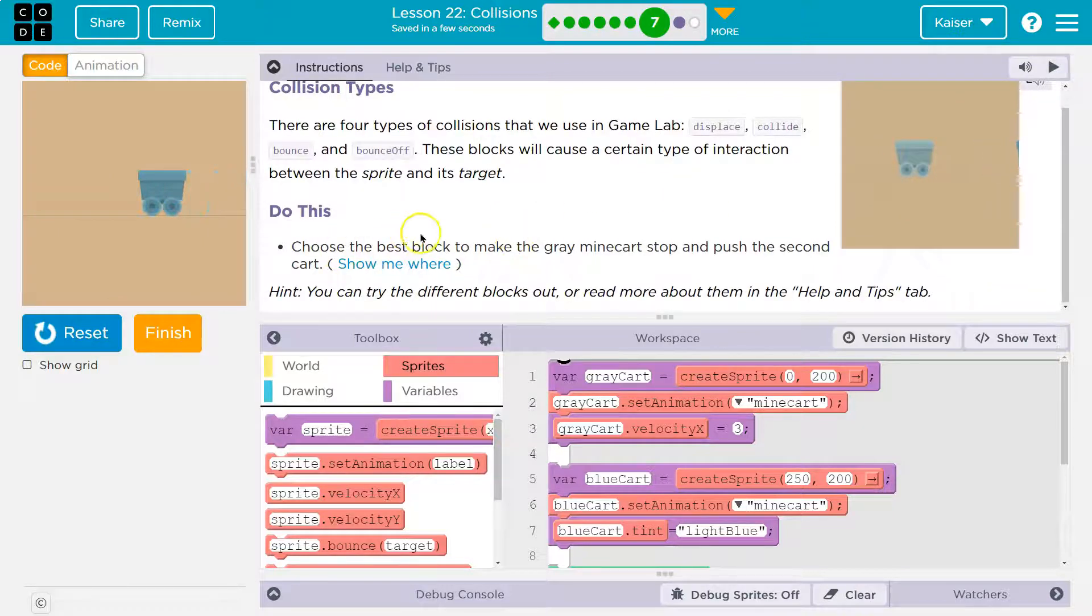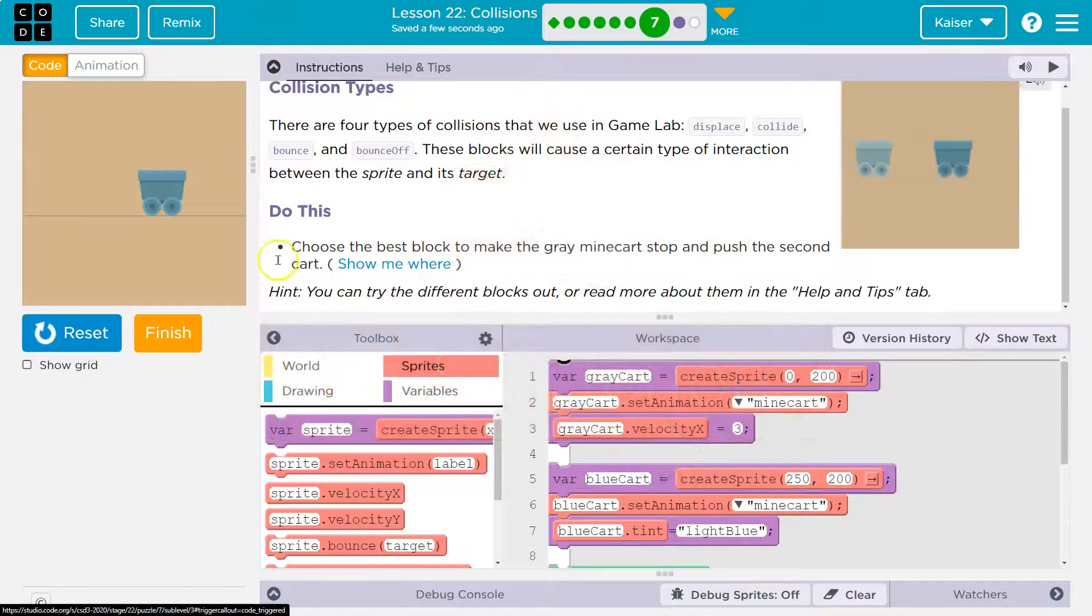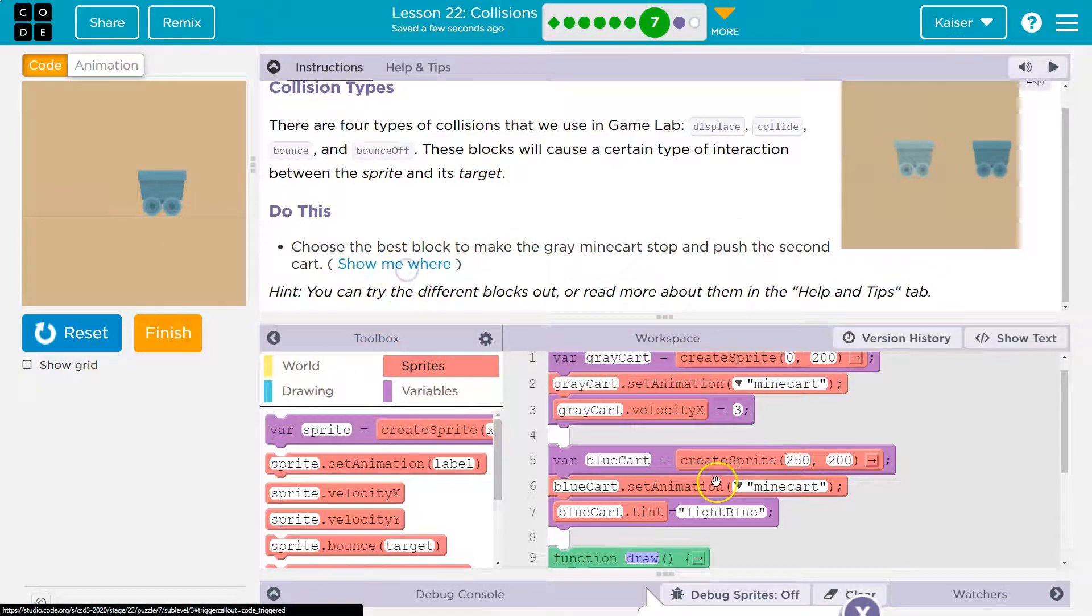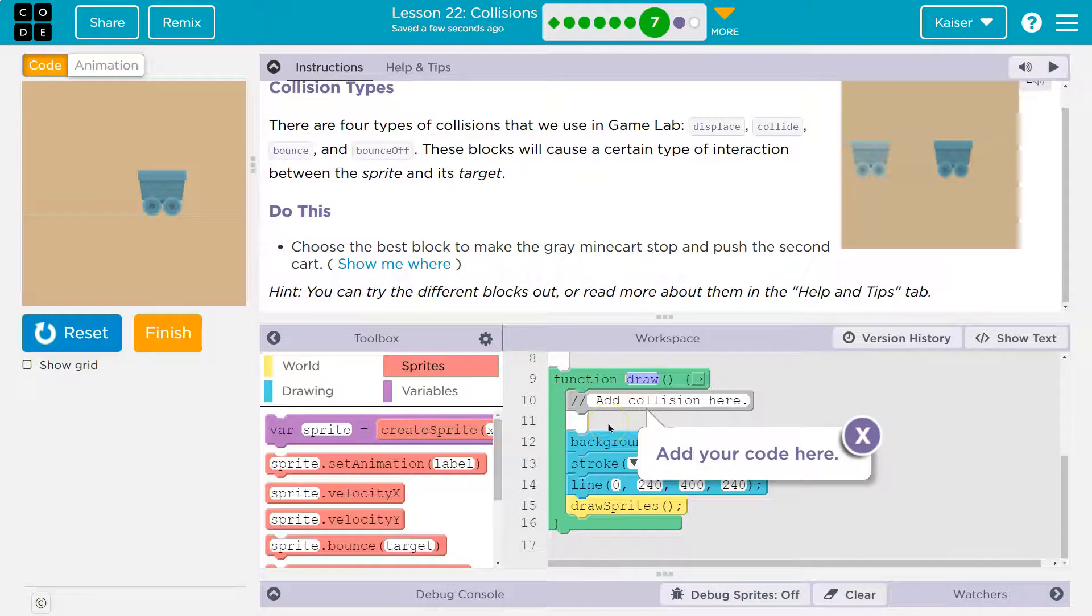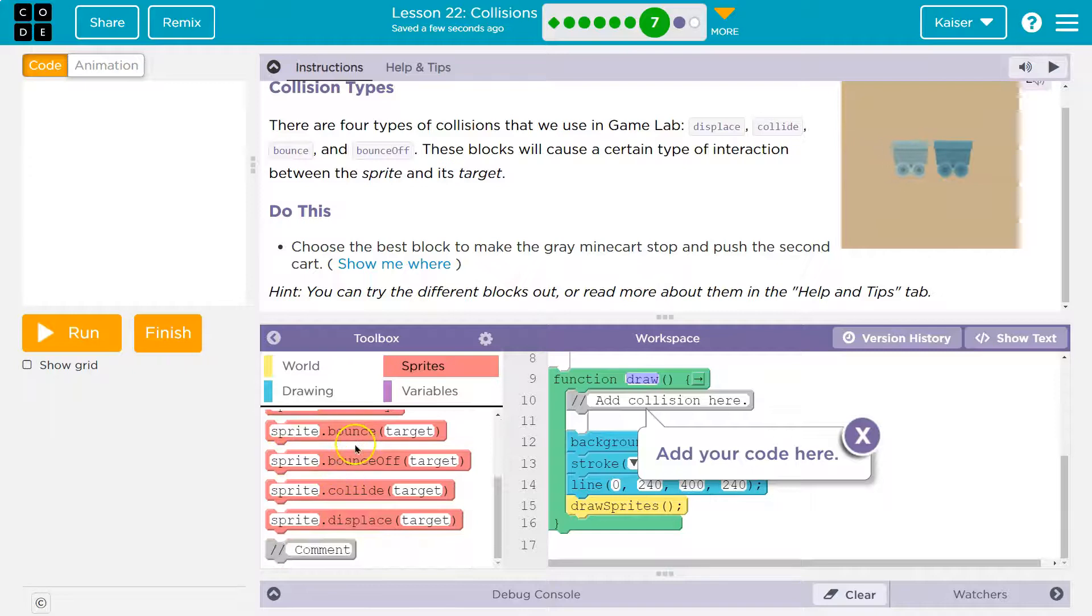Do this: choose the best block to make the gray mine cart stop and push the second cart. We want this in the draw loop, and that is because the draw loop runs 30 times a second. So 30 times a second we're going to use one of these collision blocks.